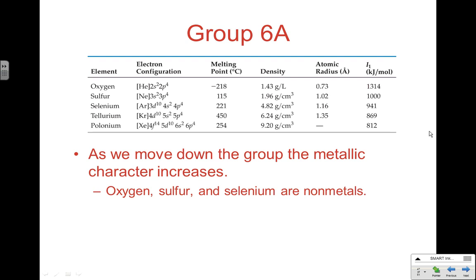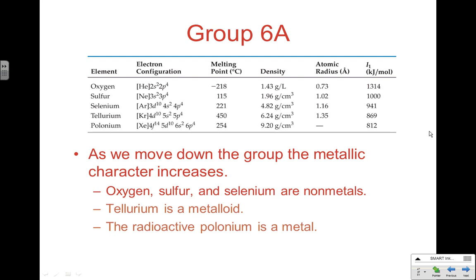Moving on to nonmetals — the first group is 6A, usually called the oxygen family. It's a pretty dysfunctional family because as you move down it, you actually cross the stair-step line separating nonmetals from metals. Within one family you have oxygen, sulfur, and selenium as nonmetals; tellurium as a metalloid; and polonium at the bottom as a radioactive, highly reactive metal. It's one of the few families that spans nonmetals, metalloids, and metals.